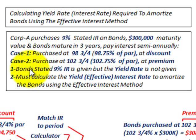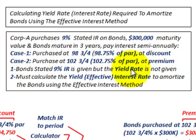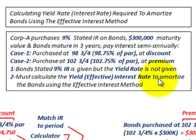This is the key point: the bond stated rate of interest is 9% per year, paid out semi-annually. That's given, but the yield rate is not given. So we must calculate the yield — the effective interest rate — in order to amortize the bonds using the effective interest method.